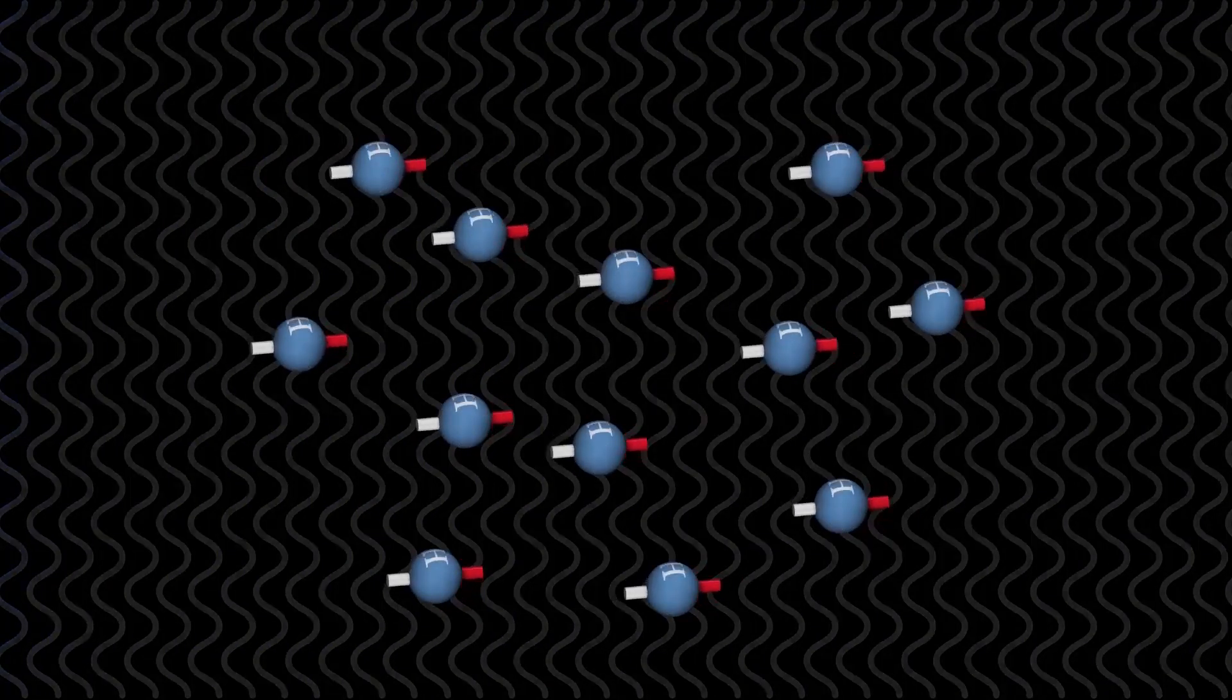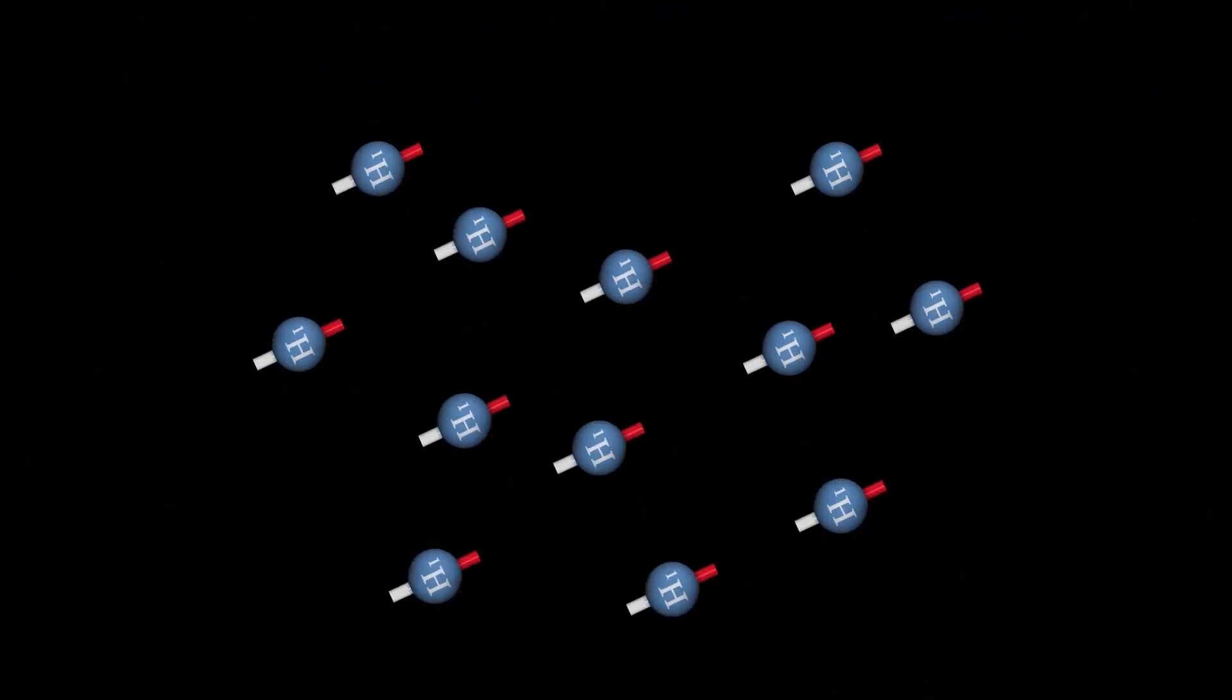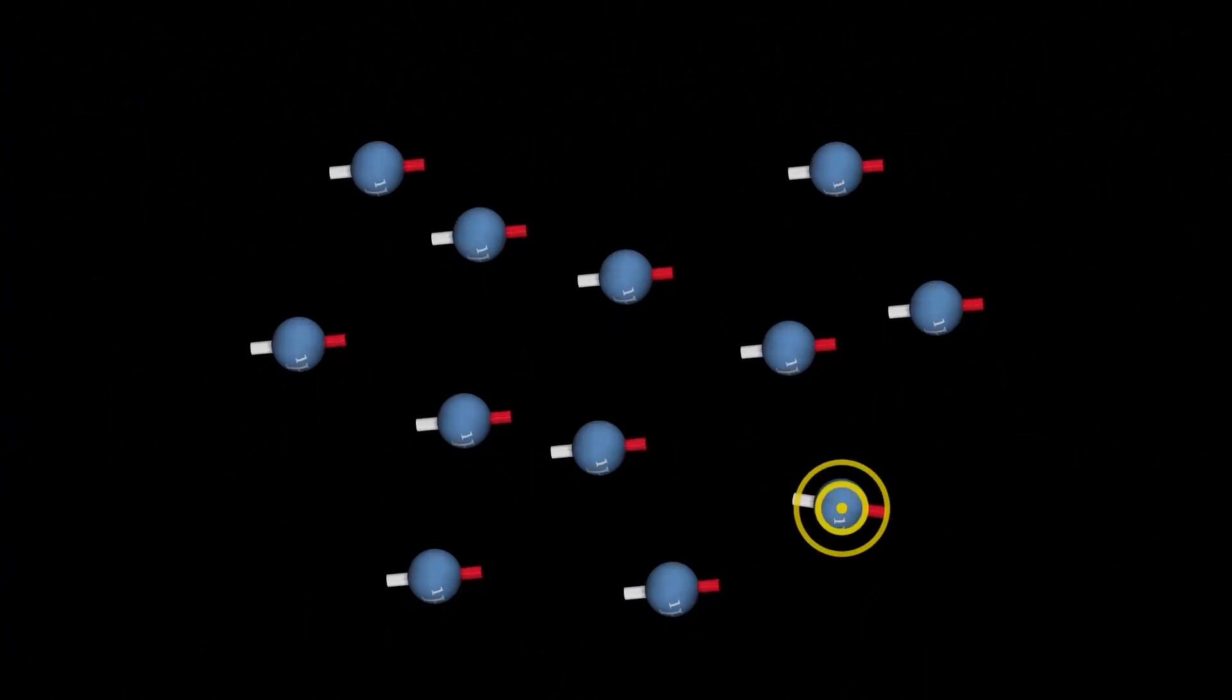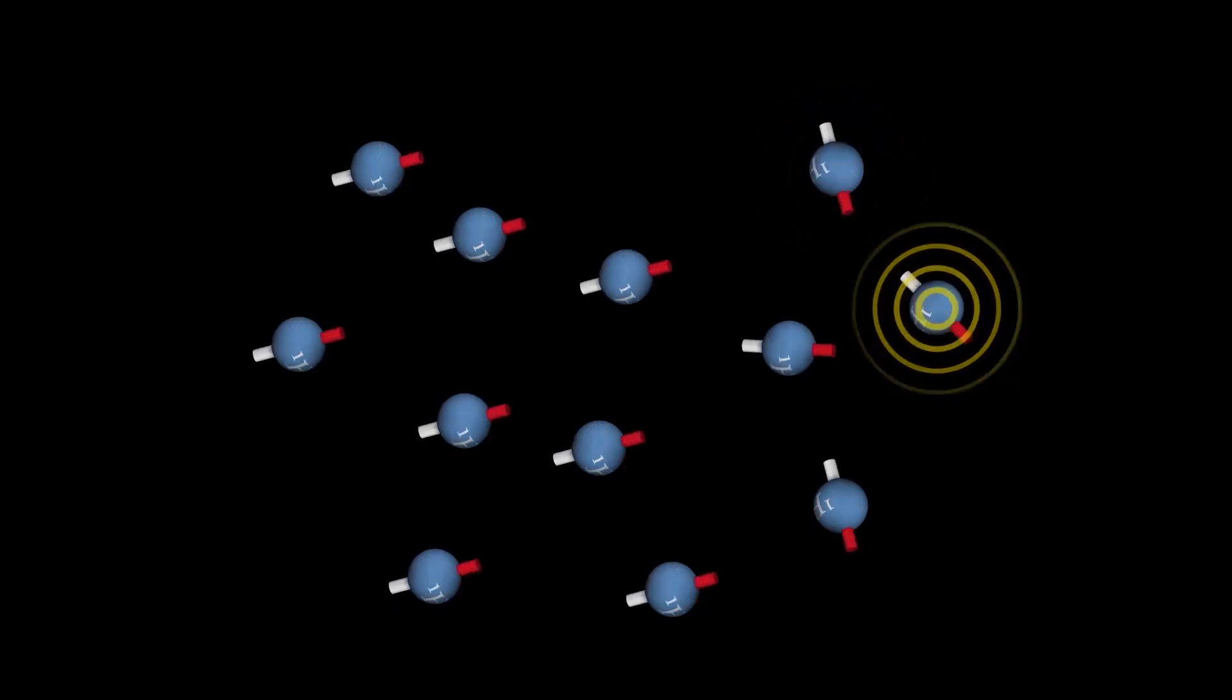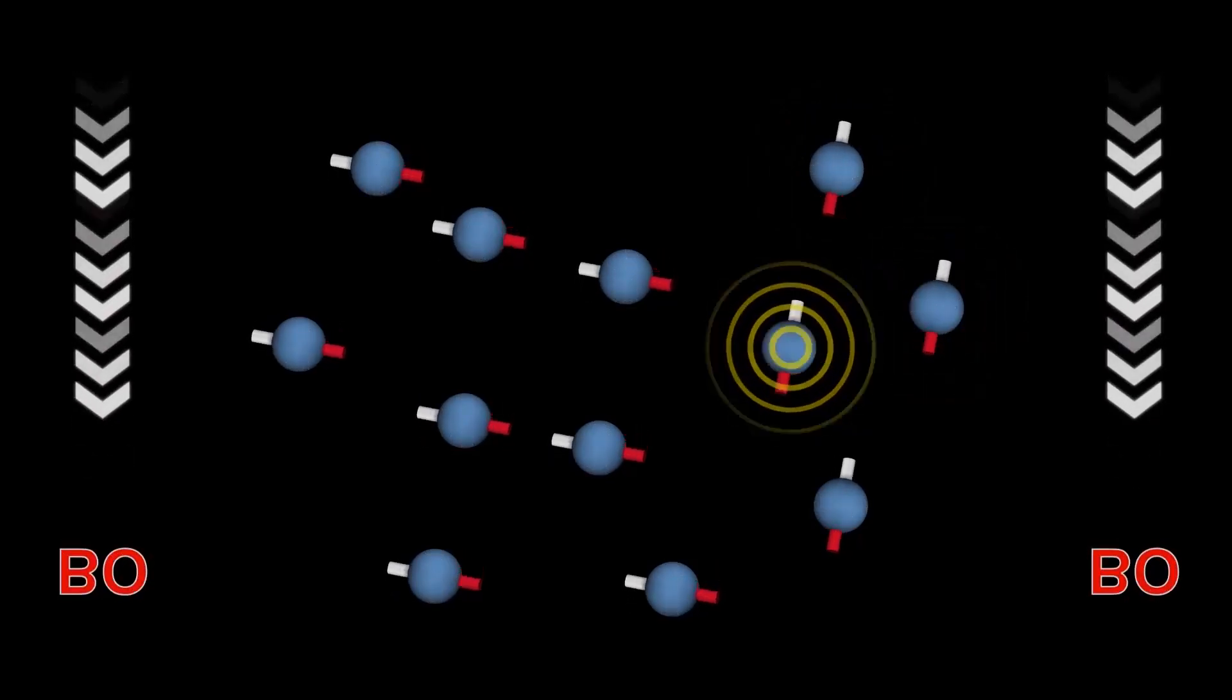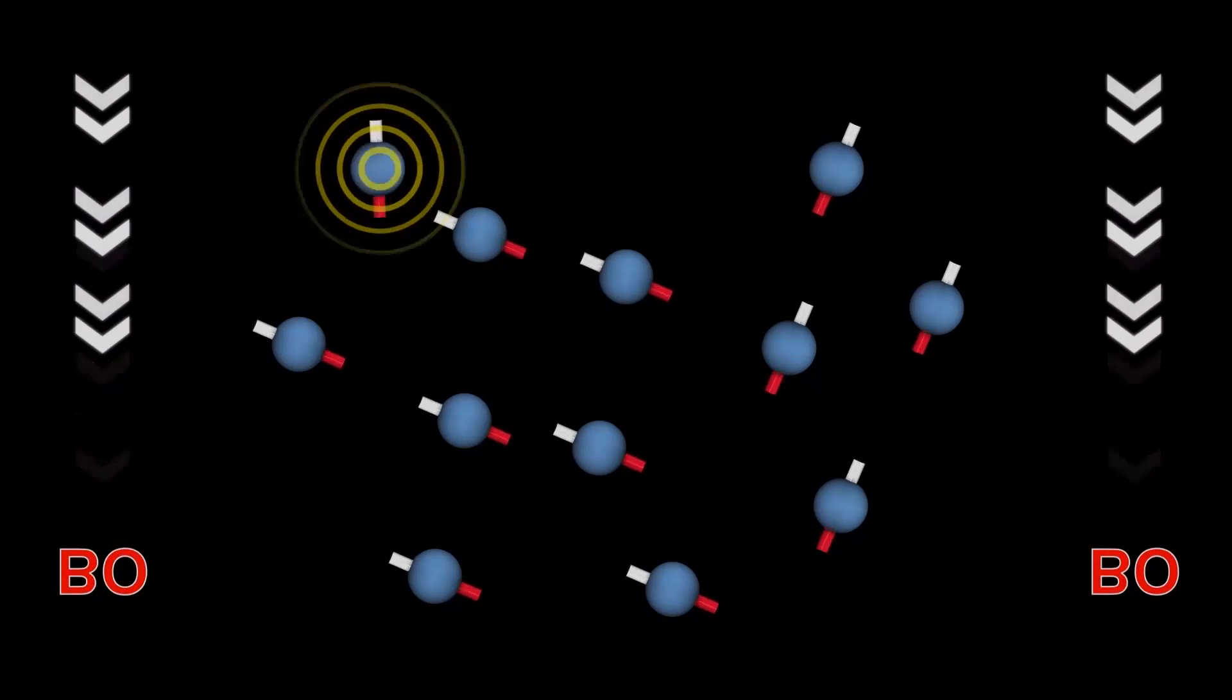When the radio frequency pulse is turned off, the protons flip back and realign along the main magnetic field, B0. As the protons flip back and realign with B0, they give off energy. Different tissues in the body give off different amounts of energy.